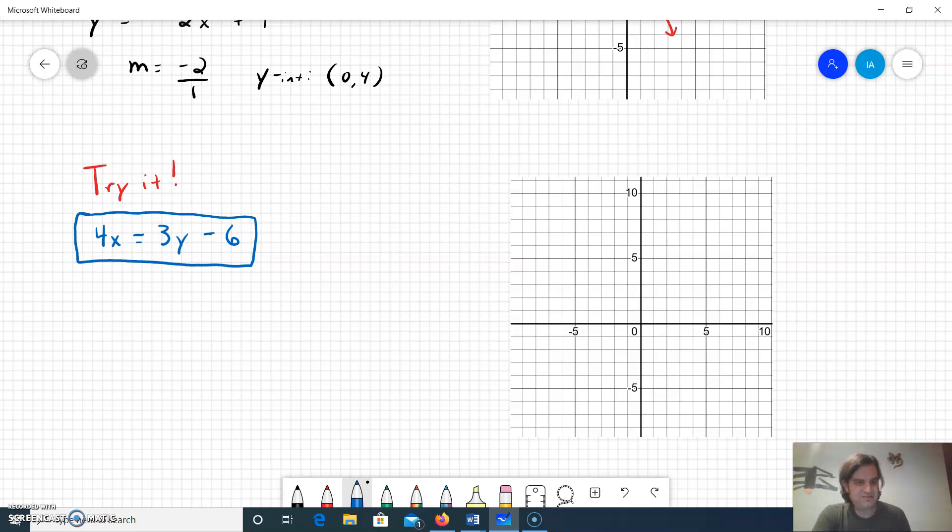If you work with this, you want to get y by itself if you're going for slope-intercept form. We can flip sides around and put the 3y minus 6 on the left and the 4x on the right, but we need to get the y by itself so we'll add 6 to each side.